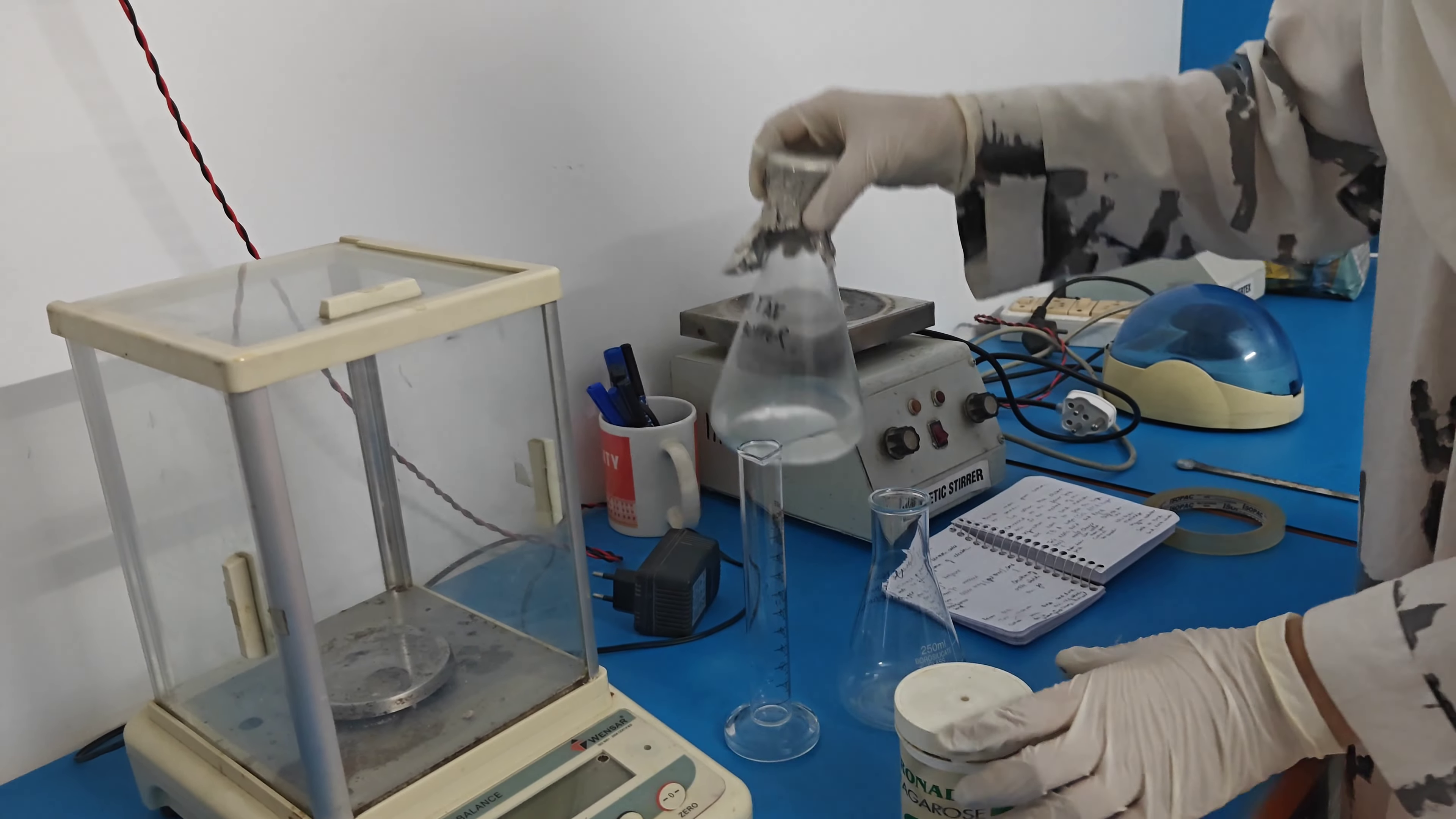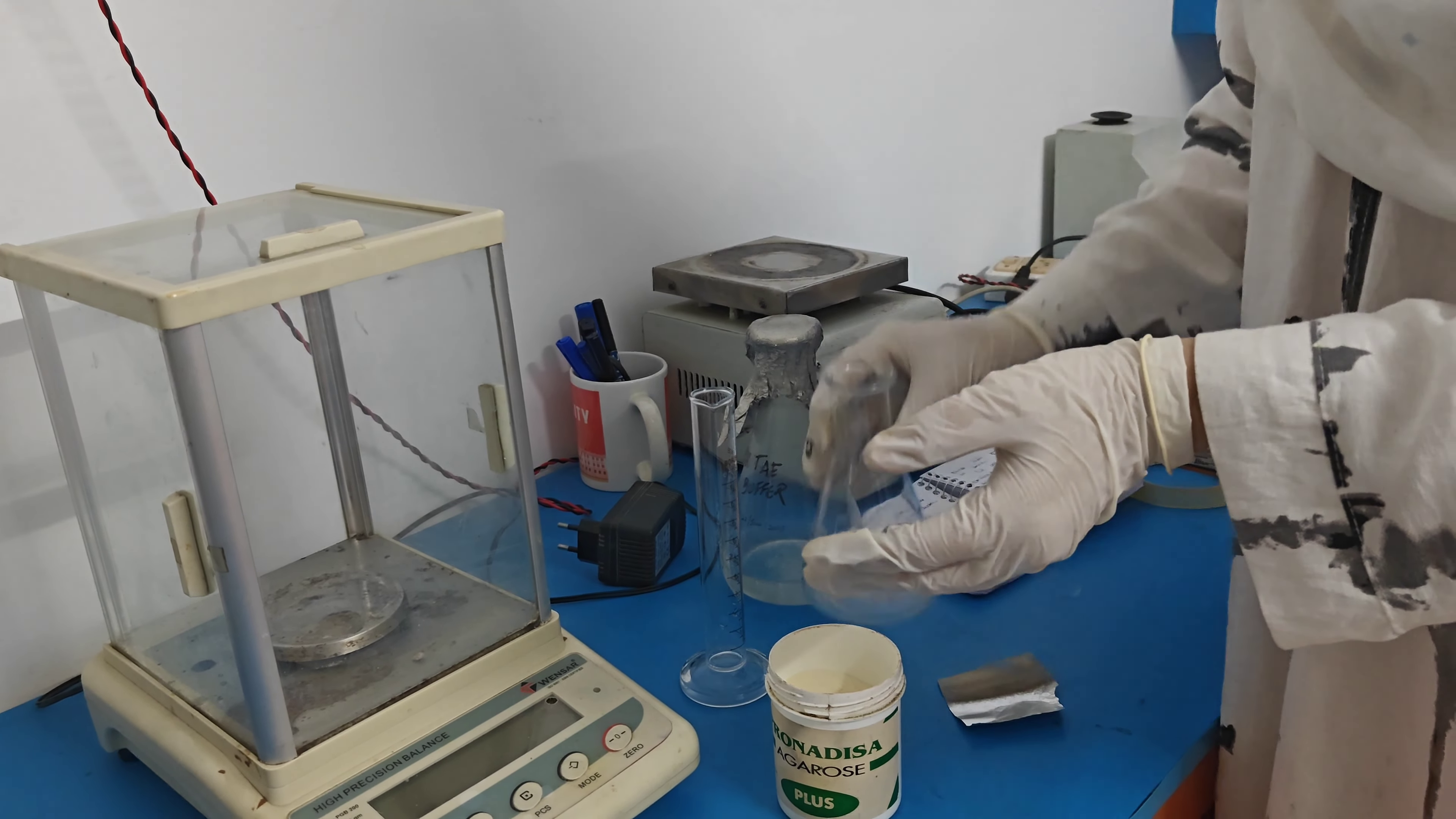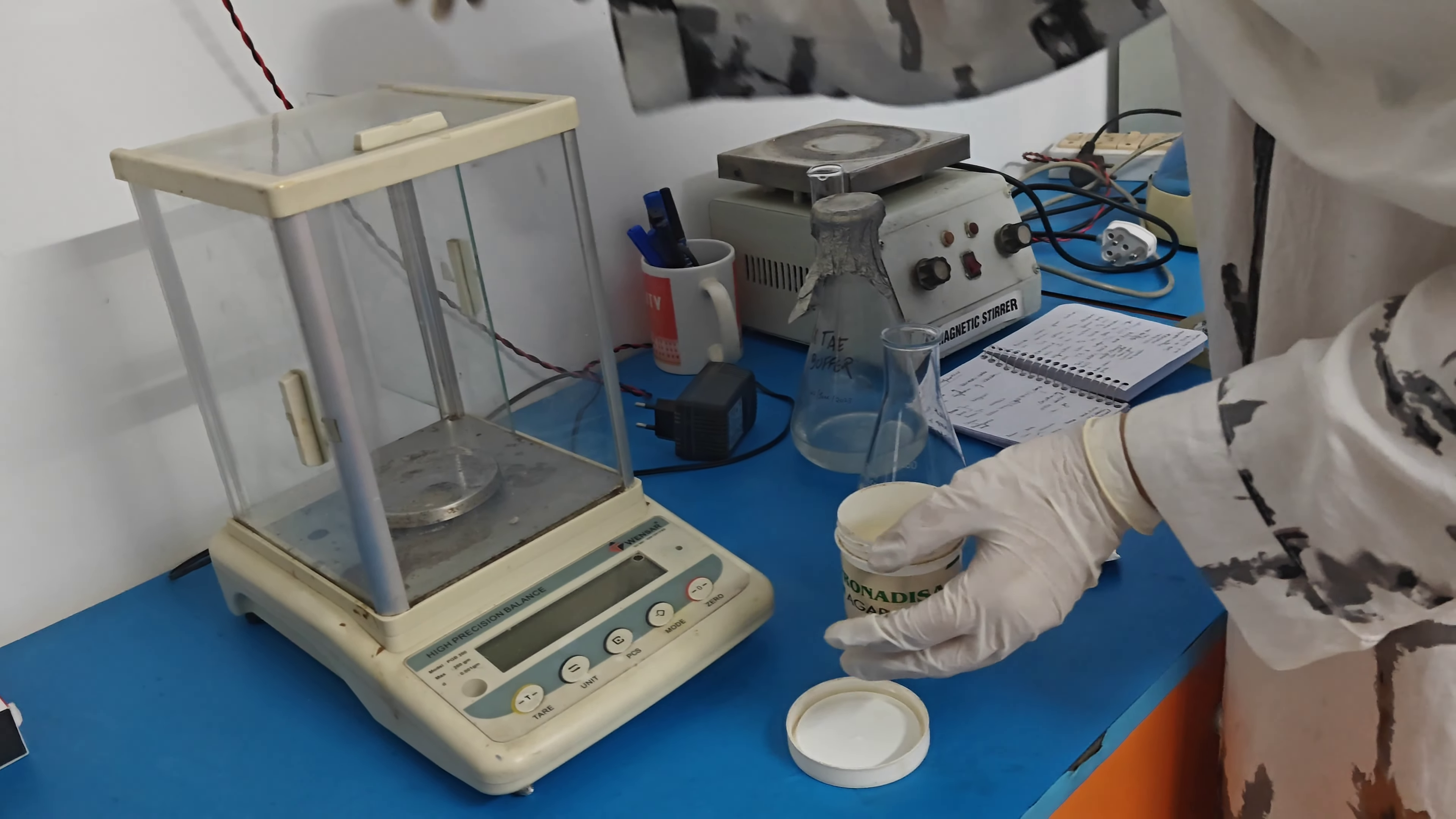First of all we have to weigh agarose gel and transfer it into a flask in which 50 ml of 1X TAE buffer is present. So let us start for weighing.